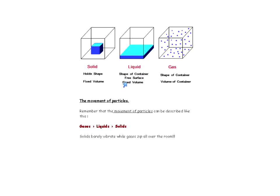Let's talk about the movement of particles in gases, liquids, and solids. All of them have particles that are moving, but they move different amounts. Solids move just a little bit — the particles vibrate back and forth. Liquids move a lot more; the particles move past each other. Gases have particles zipping all over — oxygen, for instance, moves from all corners of the room at an incredible rate. So gases move faster than liquids, which move faster than solids.